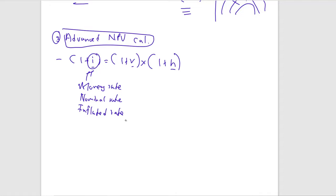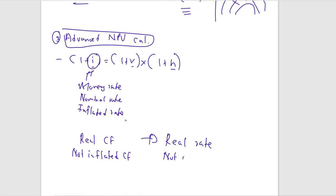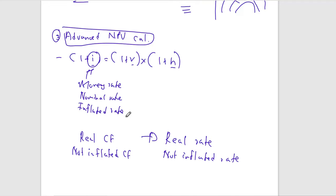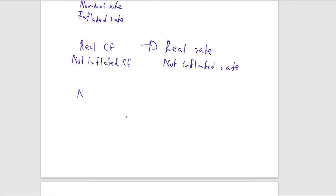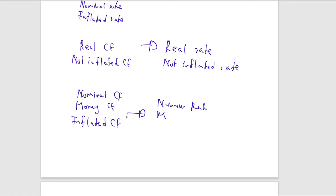For NPV calculations: if you are using real (not-inflated) cash flows, you must always use the real (not-inflated) rate. If you are using nominal (inflated/money) cash flows, you must use the nominal (money/inflated) rate. These two approaches must be consistently matched.